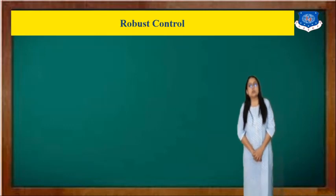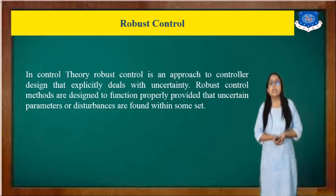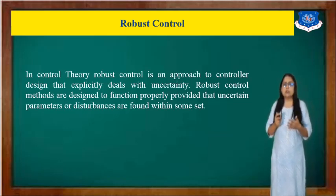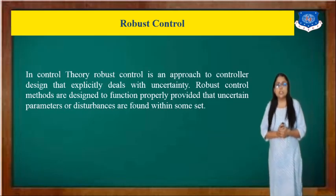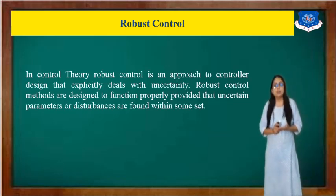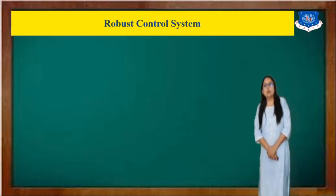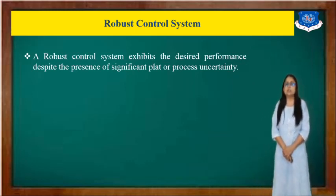First we will discuss what is robust control. In control theory, robust control is an approach to controller design that deals with uncertainty. Sometimes you design your system and because of some uncertainty you are not going to achieve the goal you actually want. The robust control framework is designed to provide proper function in the presence of uncertain parameters or disturbances. A robust control system achieves the desired performance despite significant plant process uncertainty.